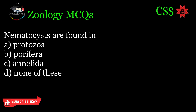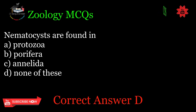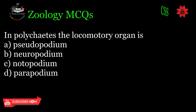Nematocysts are found in: A. Protozoa, B. Porifera, C. Annelida, D. None of these. Correct answer: D.